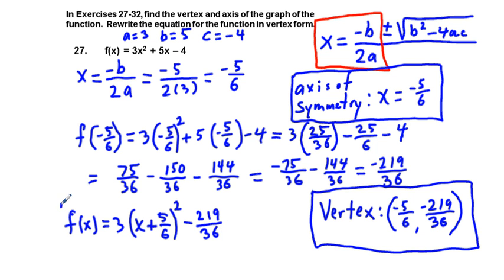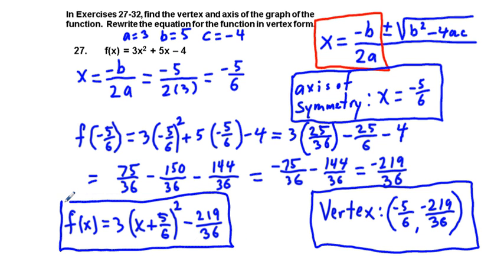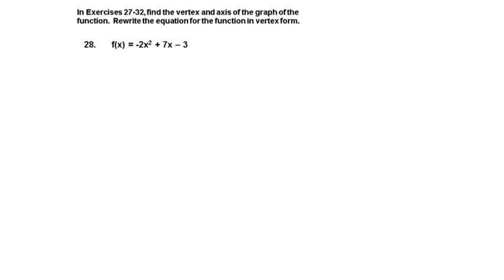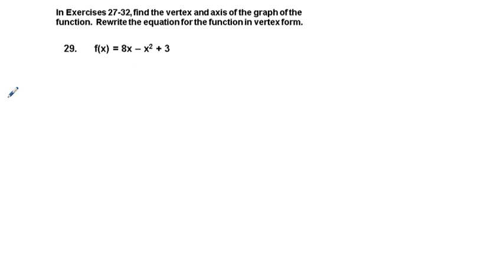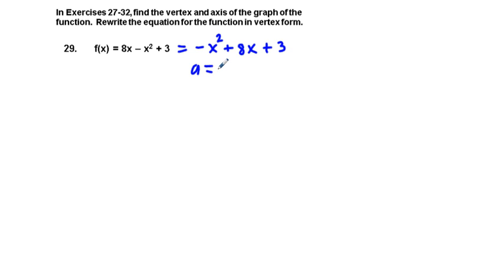Kind of tedious, but something that we can do even without a calculator. The next problem we'll look at is 29. We have the same situation but f of x equals 8x minus x squared plus 3. I'm going to rewrite this equation in standard form: negative x squared plus 8x plus 3. Our value of a is going to be negative 1, our value of b is going to be 8, and our value of c, which we're not going to use, is 3.